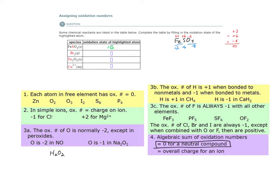What about the bromine atoms in molecular bromine? Look at rule one: each atom in a free element has an oxidation number of zero — it doesn't matter if it's monatomic, diatomic, or three or more atoms. So the oxidation number of bromine in Br₂ is zero.